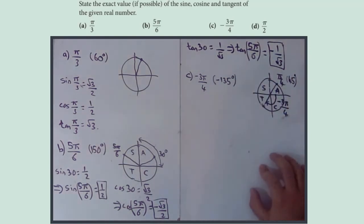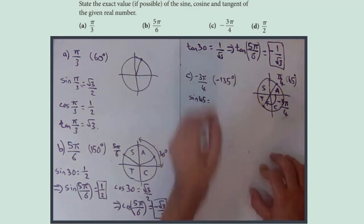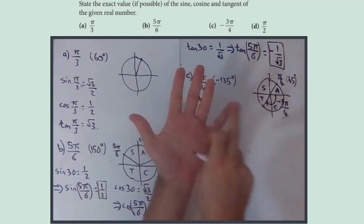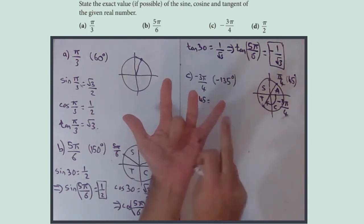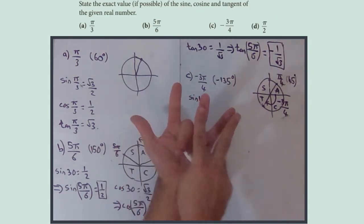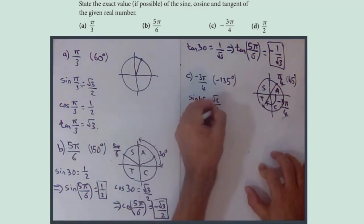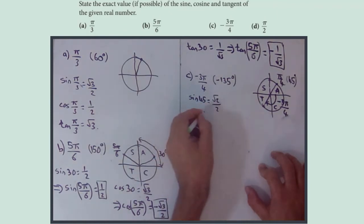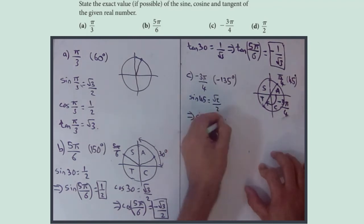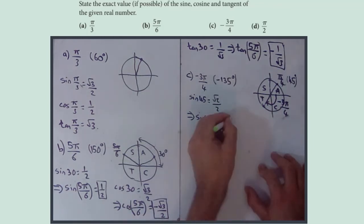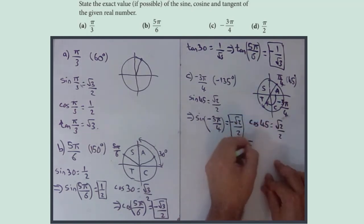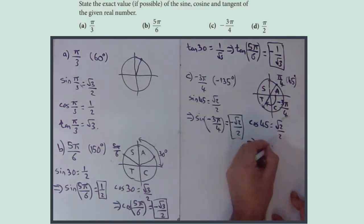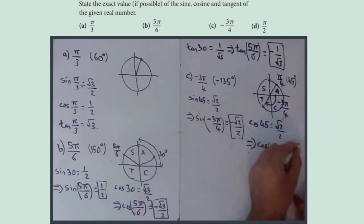We need sin, cos, and tan of 45°. From the hand — 0, 30, 45, 60, 90 — put the 45 finger down: sin(45°) = √2/2 and cos(45°) = √2/2. So sin(−3π/4) = −√2/2 because sine is negative in the third quadrant, and cos(−3π/4) = −√2/2.